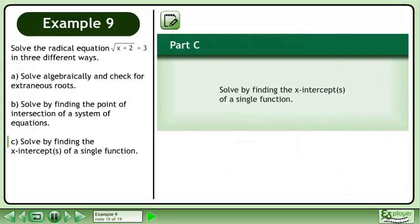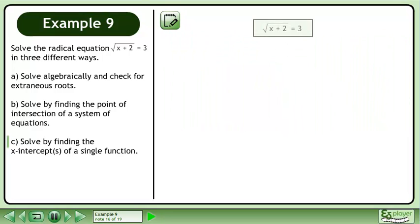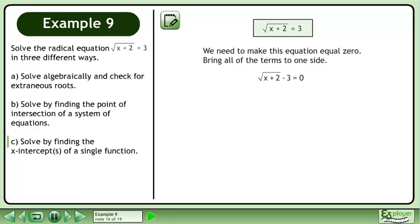In Part C, we'll solve by finding the x-intercepts of a single function. We need to make this equation equal 0. Bring all of the terms to one side. This gives us the square root of x plus 2 minus 3 equals 0.